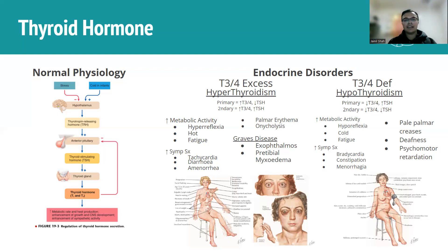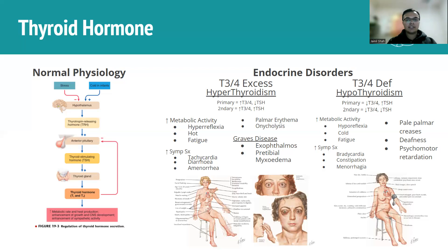Hyperthyroidism also causes amenorrhea or lighter periods. The way to remember this is sympathetic overdrive — in fight-or-flight mode the body prioritizes blood sugar and pupil dilation over reproduction, so menstrual volume decreases. Other signs include palmar erythema and onycholysis. In Graves' disease specifically, you get exophthalmos and other eye changes, and a very characteristic sign of pre-tibial myxedema — a non-pitting edema above the tibia.